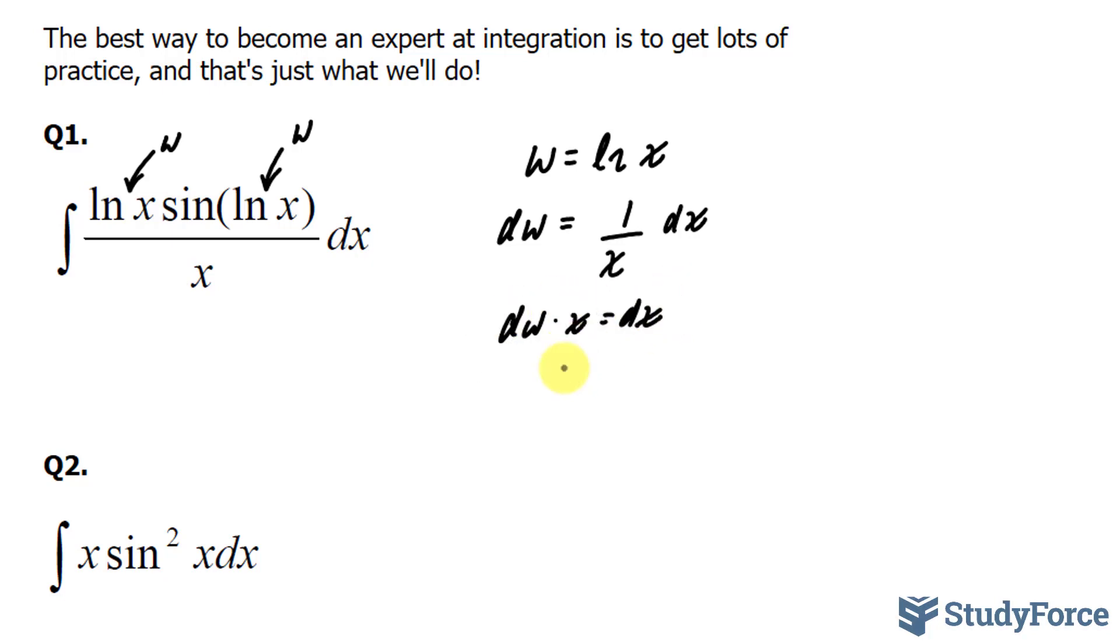So let's substitute this into our function where we get the integral of w times sine w, and dx has also changed. So let's replace dx with dw x multiplied by dw x over x. And you'll notice that the x in the numerator position will cancel out with the x in the denominator position. That being said, we are left with the function w times sine w dw.